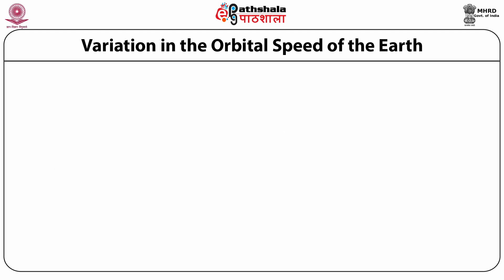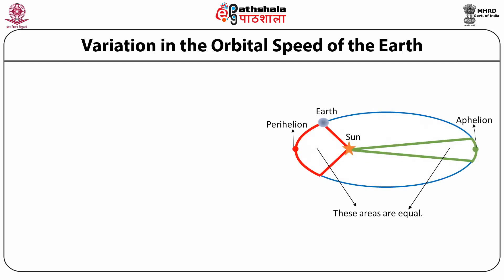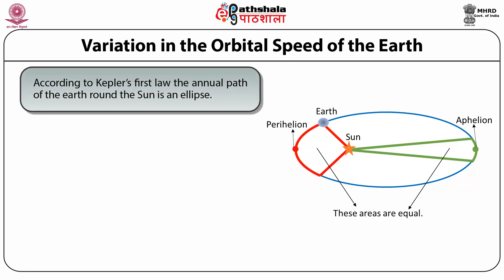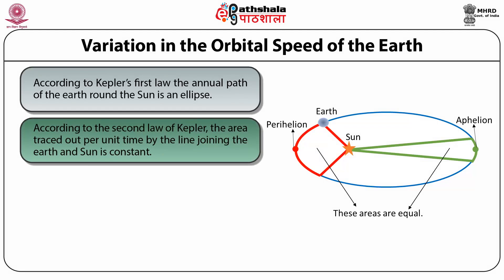Earth's orbit around the sun is not circular but elliptical, with the sun at one of the foci. The farthest point from the sun on the elliptical orbit is called the aphelion and the nearest point is called the perihelion. Kepler's three laws of planetary motion are as follows. According to Kepler's first law, the annual path of the earth around the sun is an ellipse and not circular. According to Kepler's second law, the area traced out per unit time by the line joining the earth and the sun is constant. In the picture, two arcs of orbit are shown — one around the perihelion and the other around the aphelion — and the areas swept by those arcs are also shown.